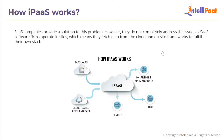SaaS companies provide a solution to this problem. However, they do not completely address the issue. SaaS software firms operate in silos — that is, they operate in separate departments — which means they fetch data from the cloud and on-site frameworks to fulfill their own stack.